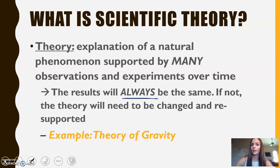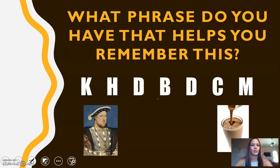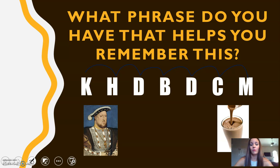Peer review is something you should be aware of — it's simply when a scientific finding is reviewed by a scientist's peers before being made public. There's a lot of bad science out there that isn't peer-reviewed, but good science found in scholarly articles has been peer-reviewed. Now let's backtrack a little bit and remember the metric units — what phrase do we use?